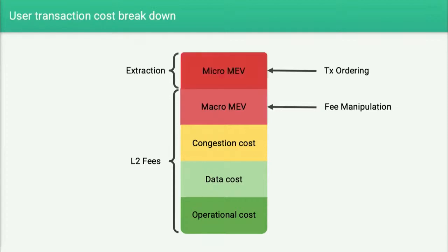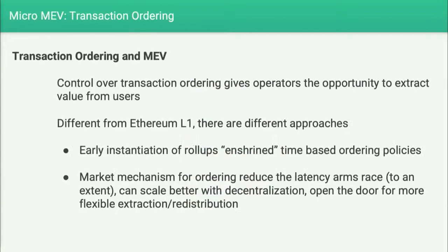Beyond L2 fees, the user may incur additional economic costs from transaction ordering and extraction. This micro MEV — transaction ordering — is what many talks have focused on. I believe the next talk will focus specifically on transactional ordering on L2, so I won't focus much on this, but I want to mention a couple of short remarks.